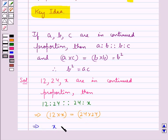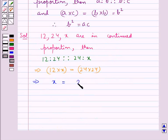This means x equals 24 times 24 divided by 12. Now, 12 times 2 is 24, so this equals 24 times 2, which equals 48.